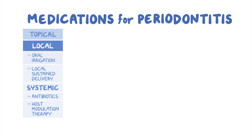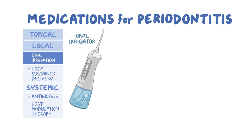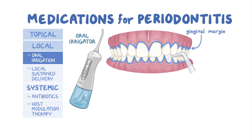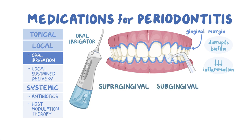Switching gears and moving on to local delivery medications, which can be subdivided into oral irrigation and local sustained delivery. An oral irrigator is a device that directs a stream of pressurized water or solutions along the gingival margin and between teeth. The stream of water disrupts the formation of the dental biofilm and decreases gingival inflammation. Oral irrigation is further subdivided into supragingival and subgingival irrigation.